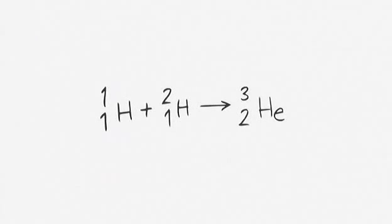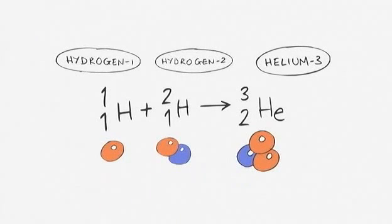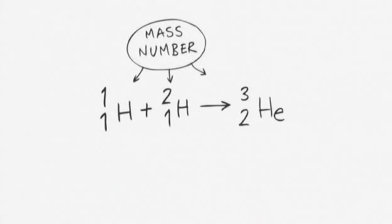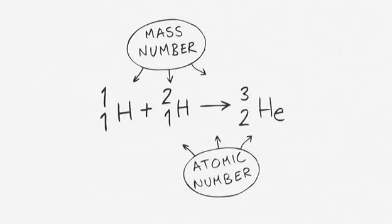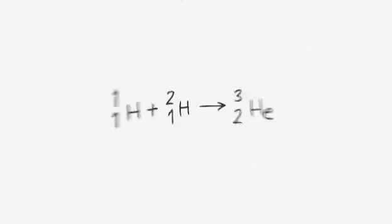In symbols, we write it like this. We include the mass number and the atomic number for each atom. So we can see exactly what is going on. The mass number is the total mass of the nucleus. That's protons plus neutrons. The atomic number is just the number of protons.